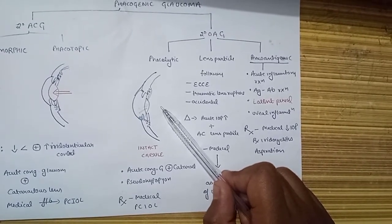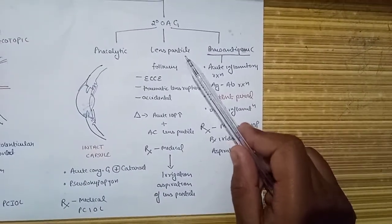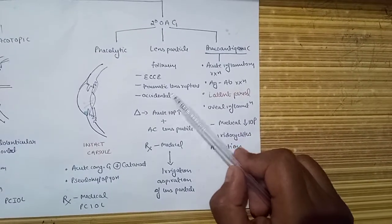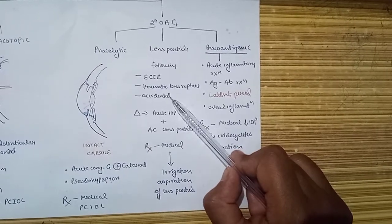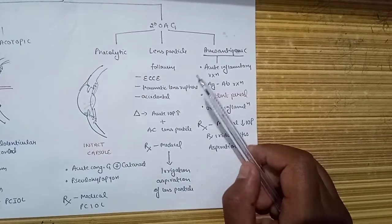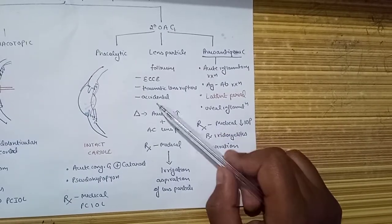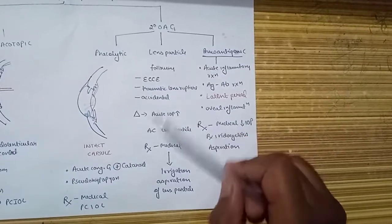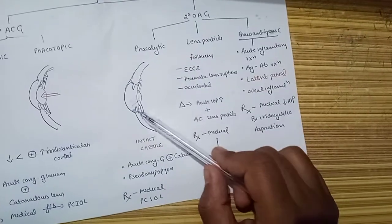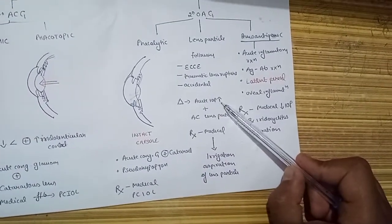Going on for lens particle glaucoma: these occur following surgery or trauma, or traumatic lens rupture. It may be accidental or following extracapsular cataract extraction. When lens particles are not completely cleared out, the remnants remain inside and may clog the anterior chamber angle, similarly as in the case of phacolytic.